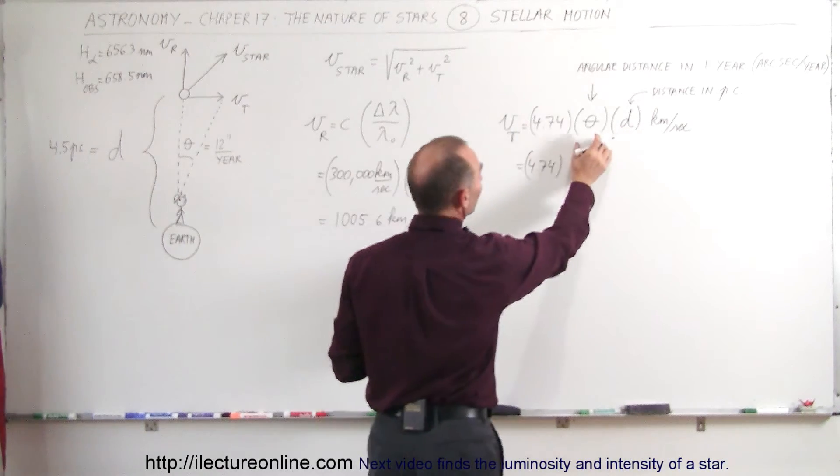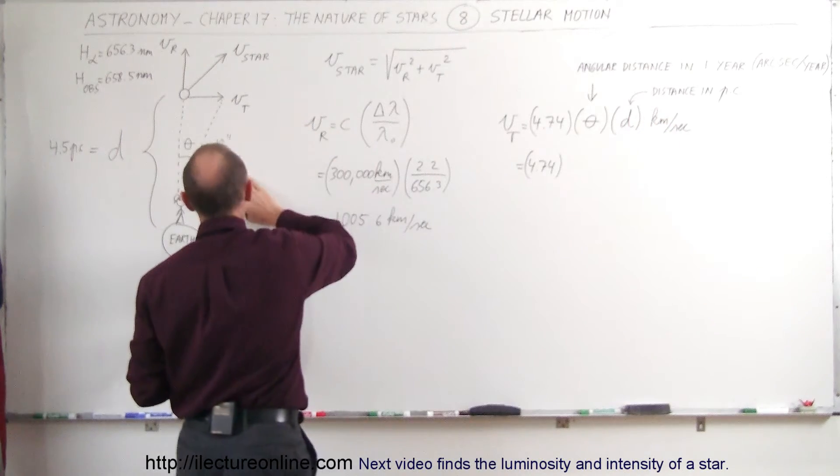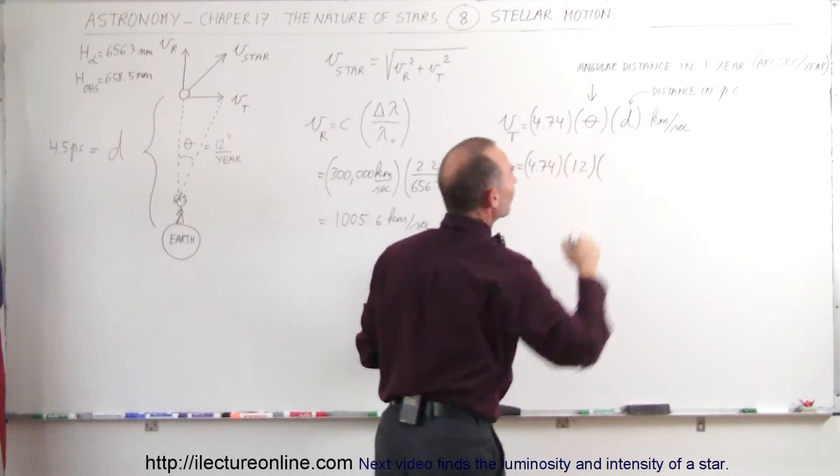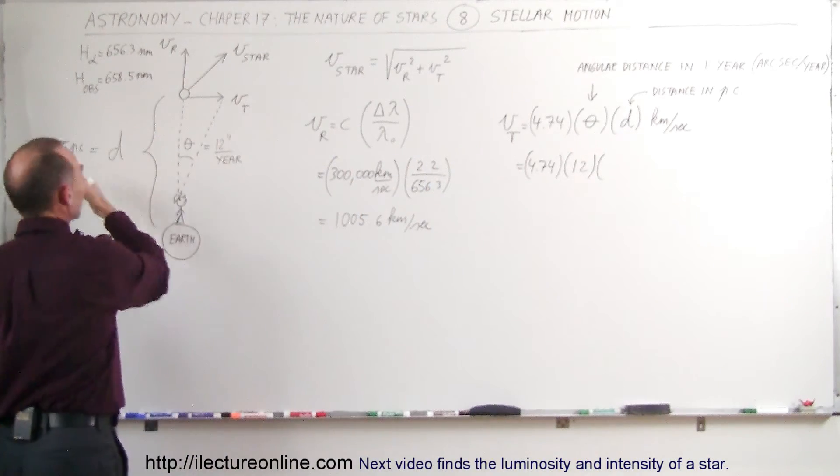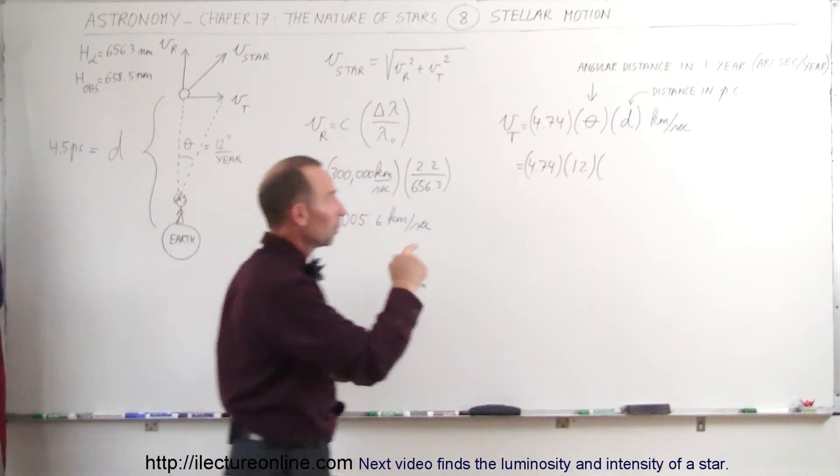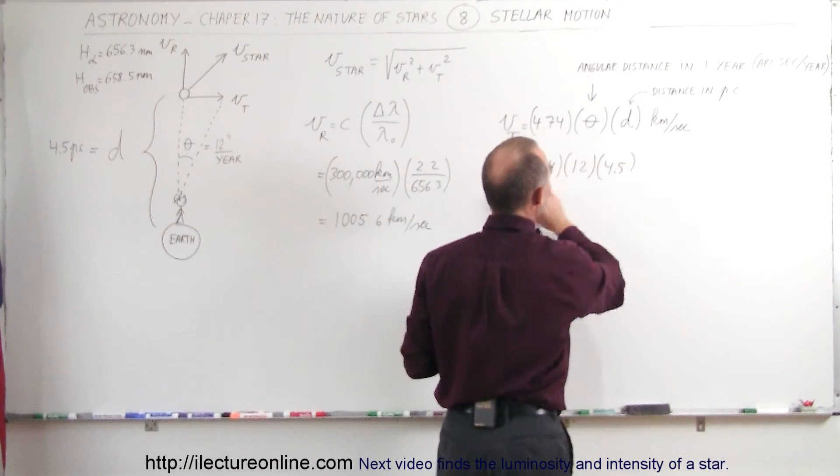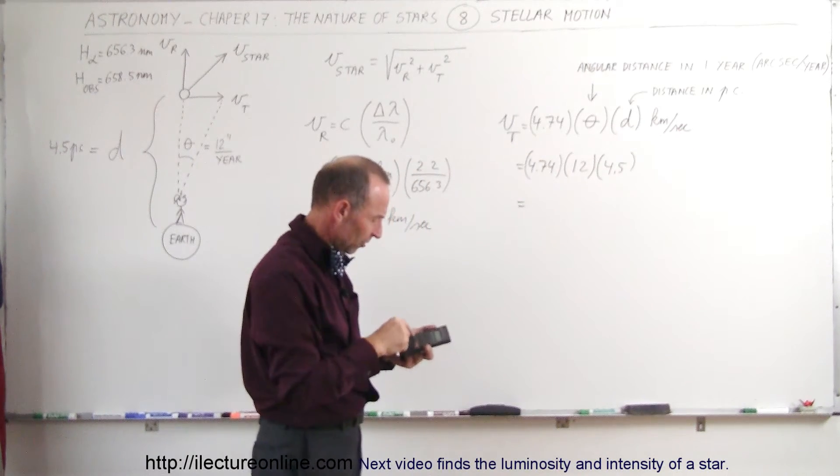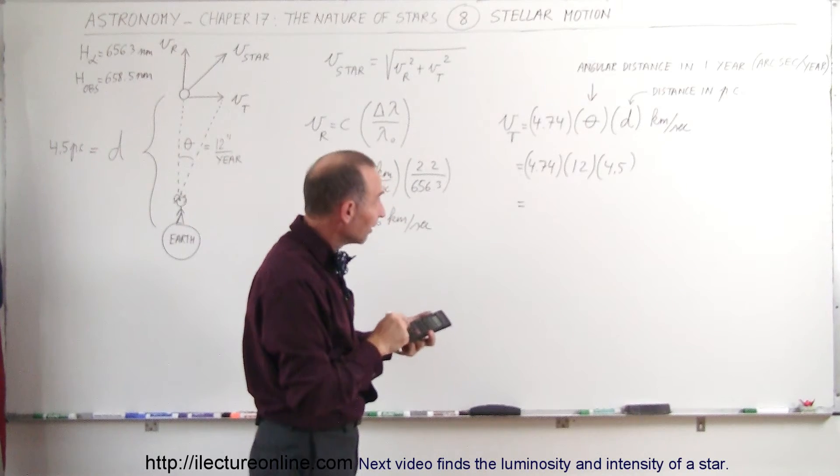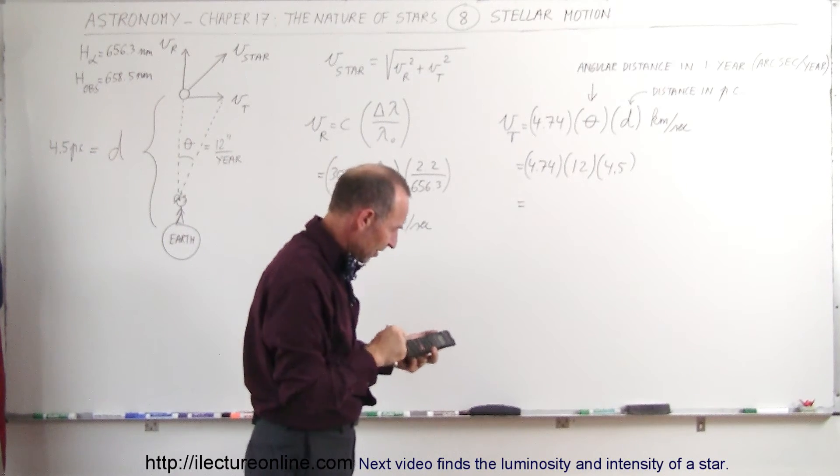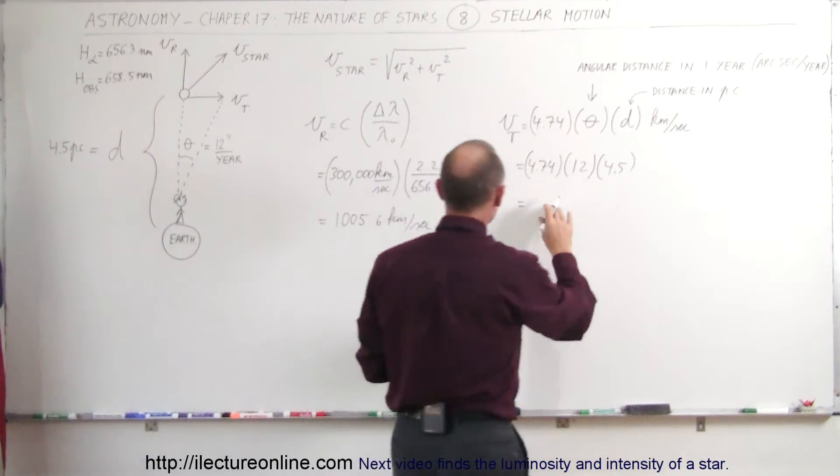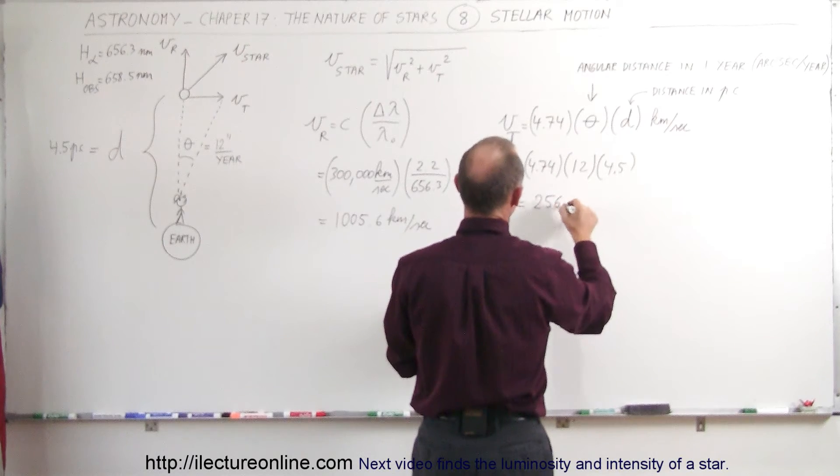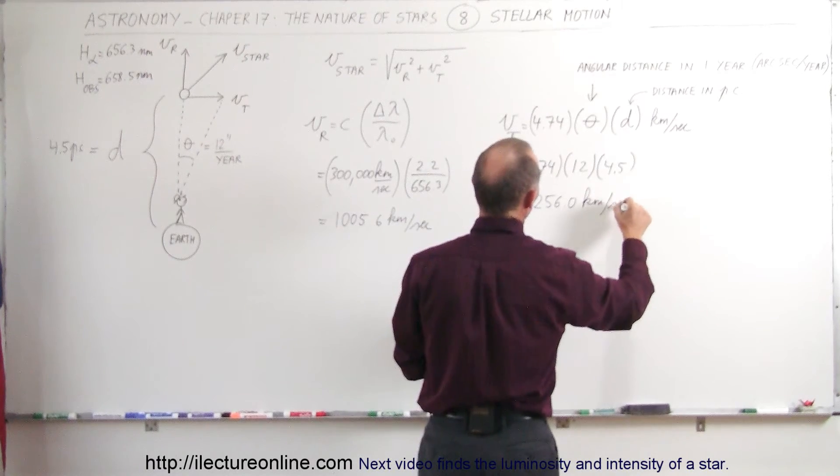In this case, 12 arc seconds in a year, so we multiply that times 12 arc seconds, and then the distance in parsecs. And in this case, let's say that the star was 4.5 parsecs away, so we'll put that over there, 4.5, and the answer will come to us in kilometers per second. So let's go ahead and calculate that, 4.74 times 12 times 4.5, and we find that the tangential velocity is 256.0 kilometers per second.